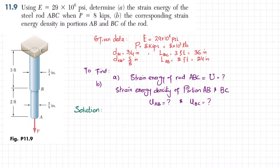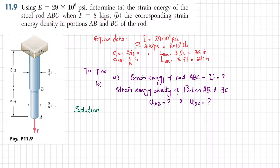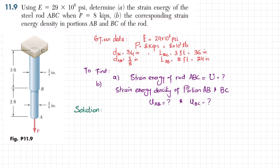Welcome back. Problem 11.9 is taken from Chapter 11, Energy Methods, from the book Mechanics of Materials by Beer & Johnston. The problem states: using E equal to 29 into 10 to the power 6 psi, determine the strain energy of the steel rod ABC when P is 8 kips, and the corresponding strain energy density in portions AB and BC of the rod.